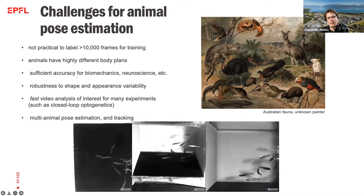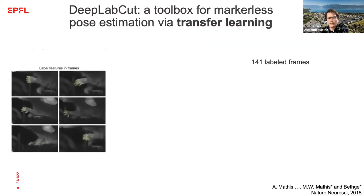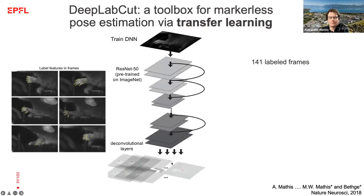I will briefly talk about these different problems and how we have addressed them. I'll start by introducing an algorithm we proposed three or four years ago, where we showed that because of transfer learning, we are really able to adapt targeted deep learning algorithms for pose estimation to the laboratory situation with relatively little annotation data. This algorithm, in a nutshell — DeepLabCut — consists of a backbone, which in this specific case is a residual neural net with 50 layers pre-trained on ImageNet.